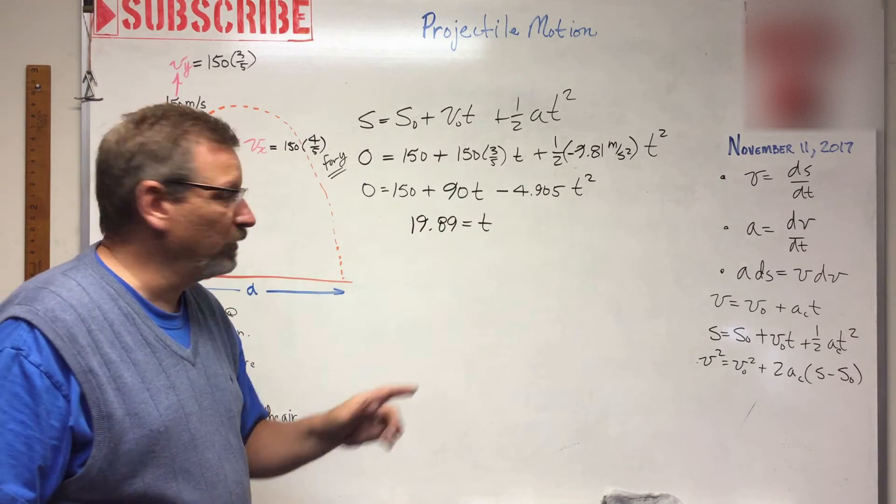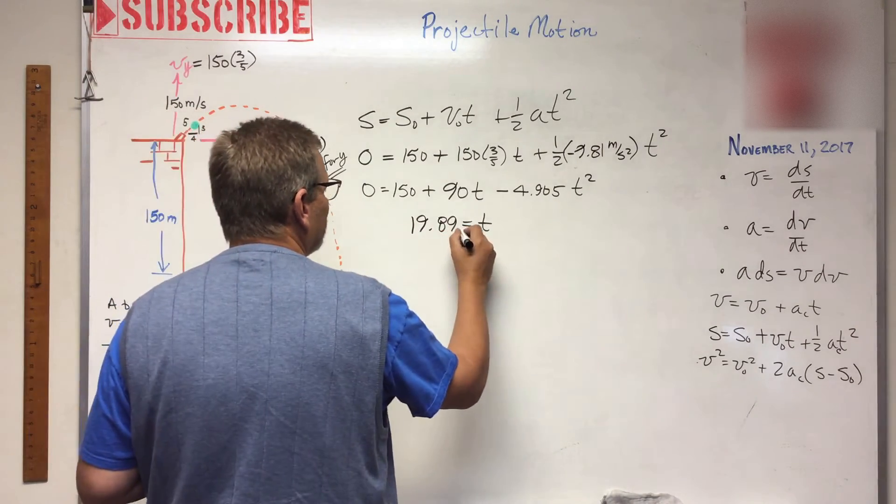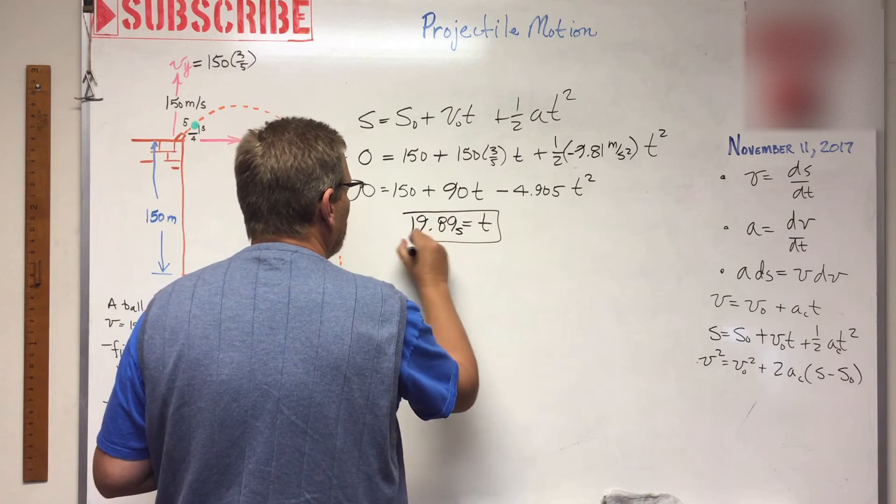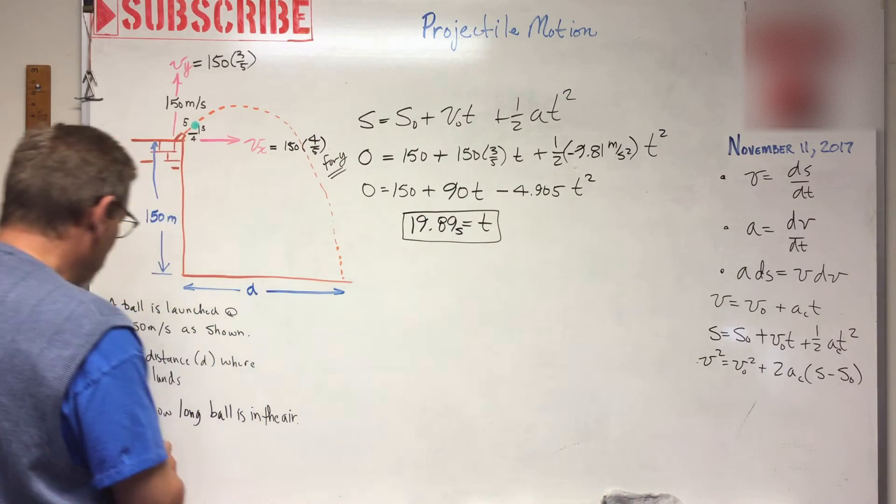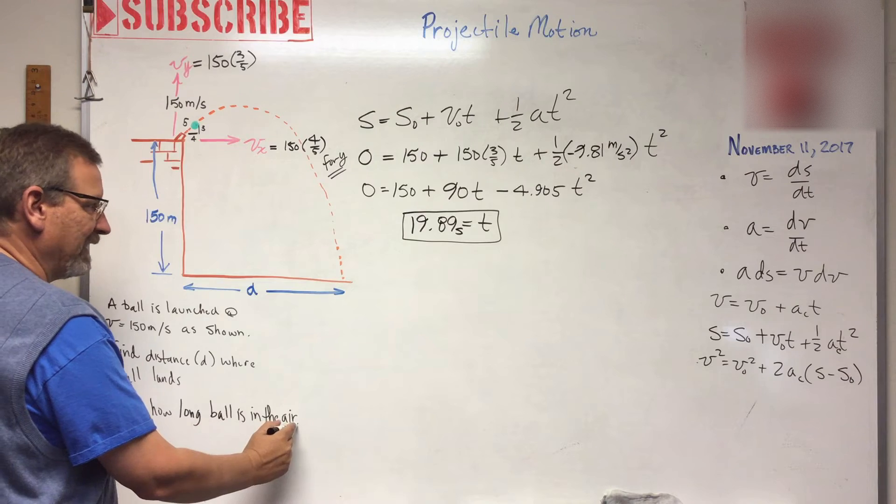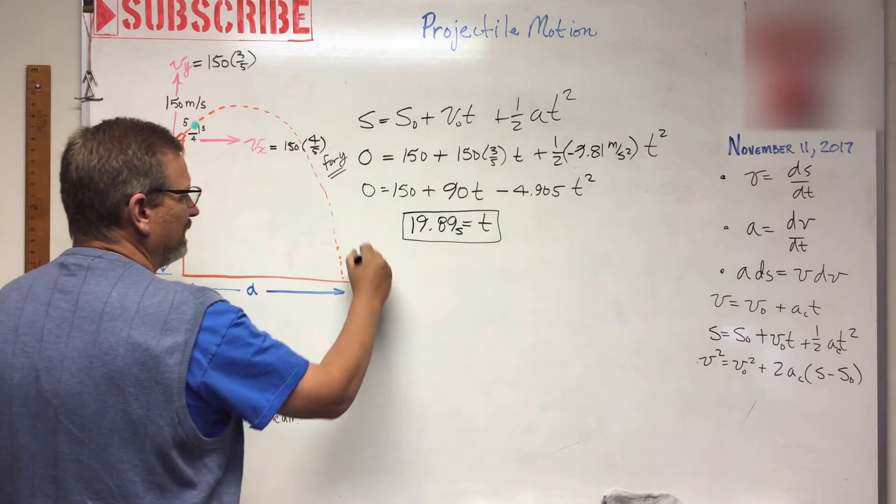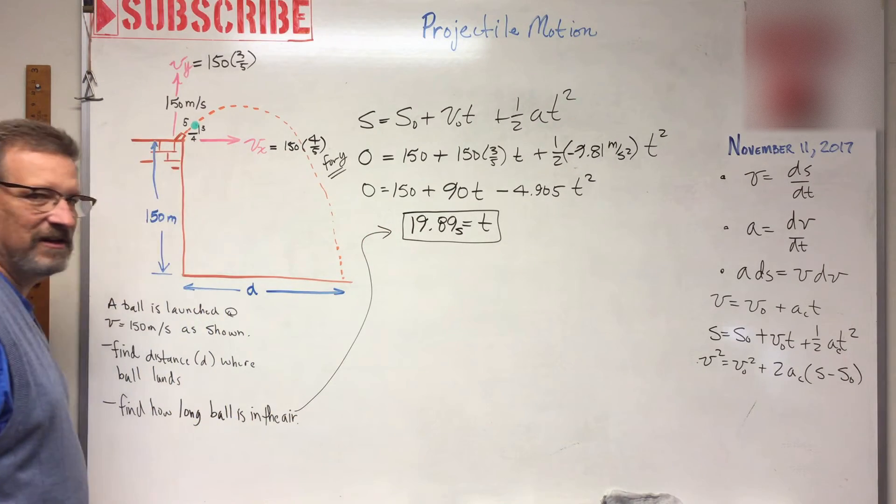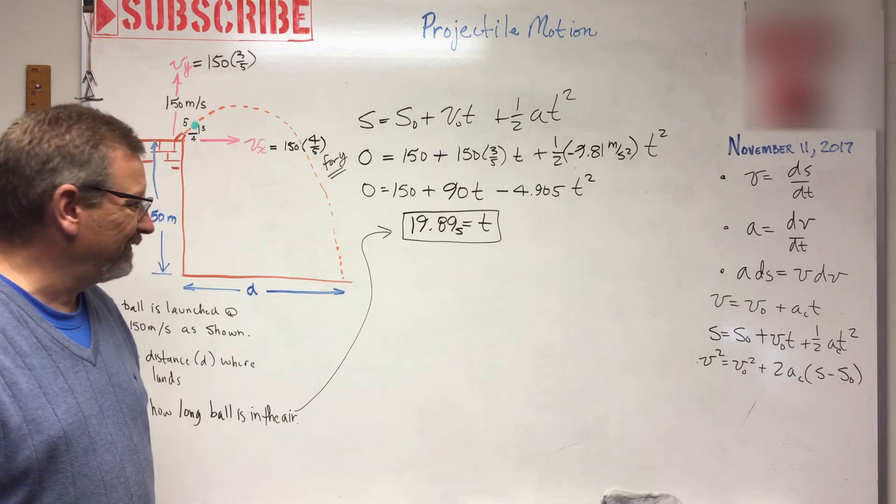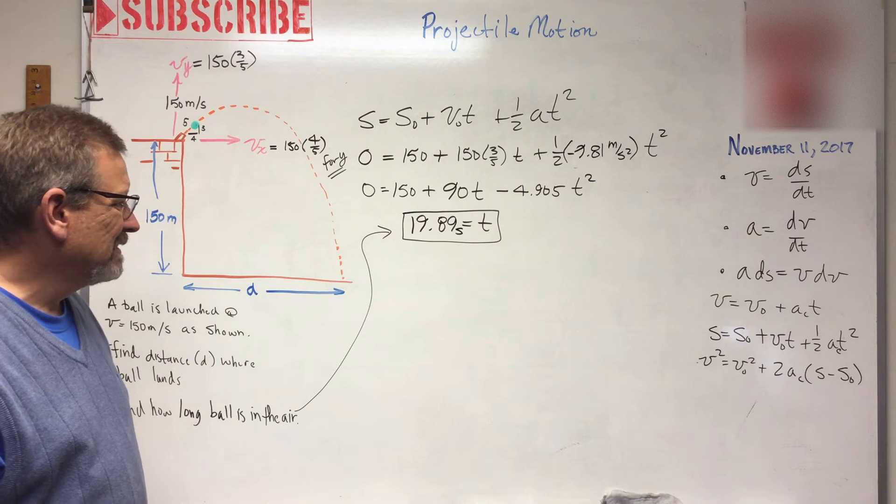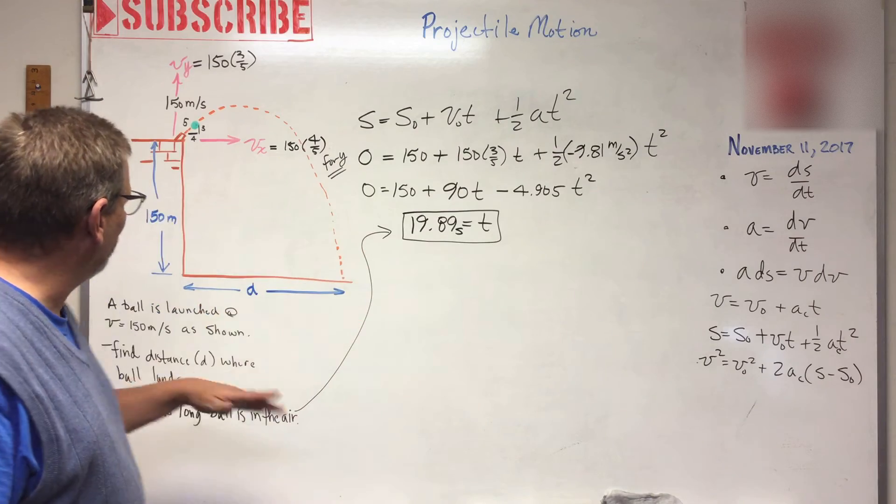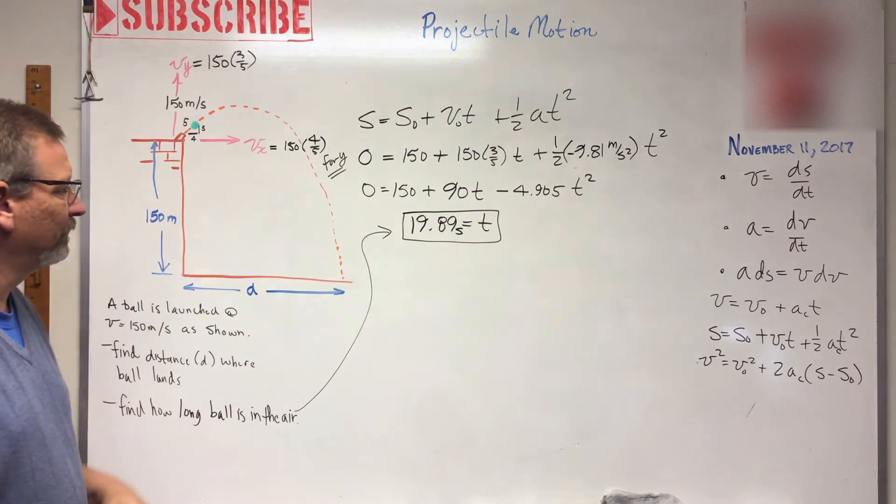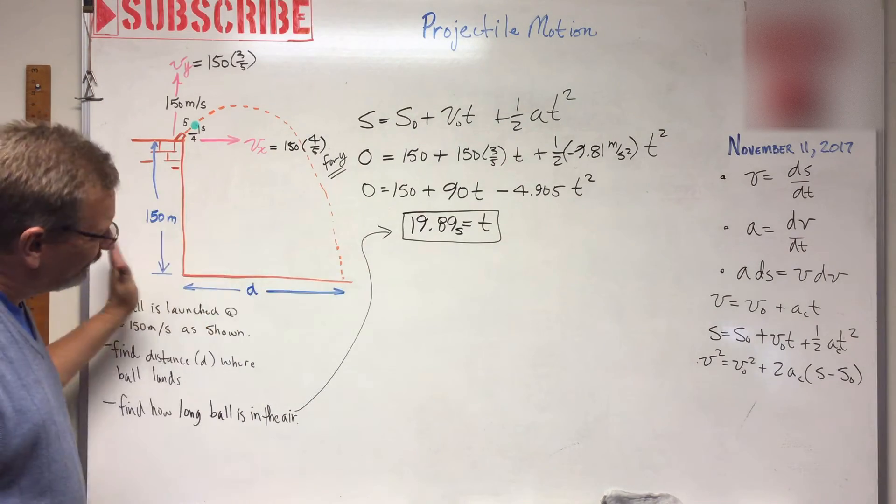It gives me one negative root. Do you think that the time is negative? I don't. And it gives me one positive root which is 19.89. So out of the two possible roots, only one makes sense, and I think that that is it. So guess what? How long is the ball in the air? Well, it's in the air for 19.89 seconds.